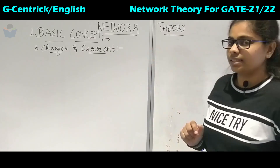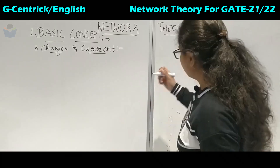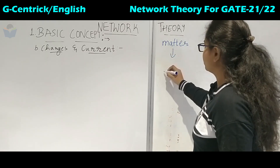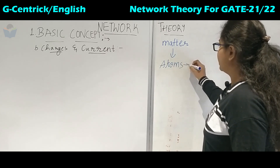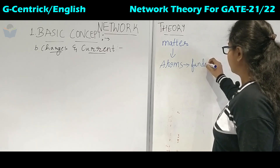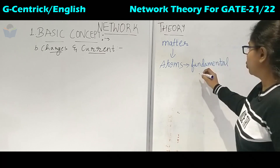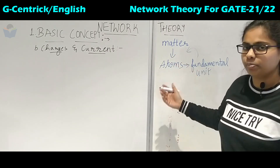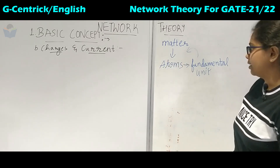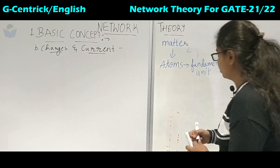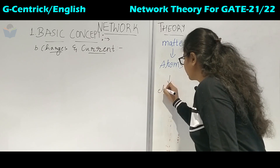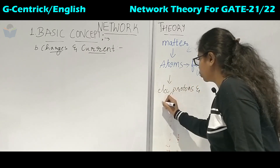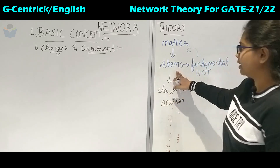Now where did these charges come from? To know that we will go to chemistry. This matter — what is it made up of? It is made up of atoms. Atoms are the fundamental unit of matter. They can be made up of the same type of element or different types of atoms. This atom consists of electrons, protons, and neutrons — these are the three particles found in the atom.